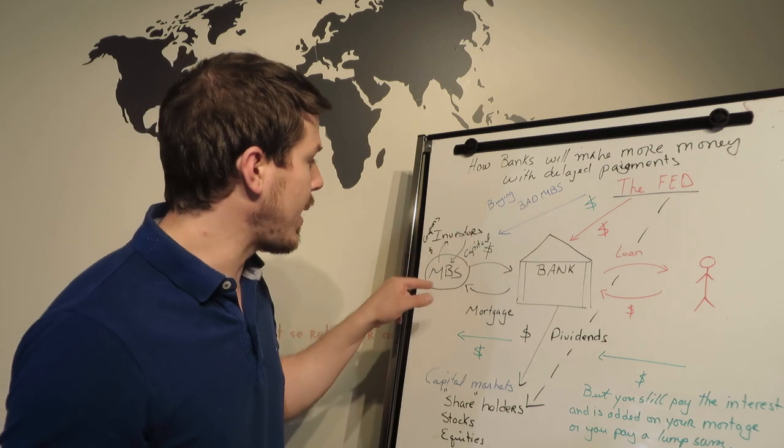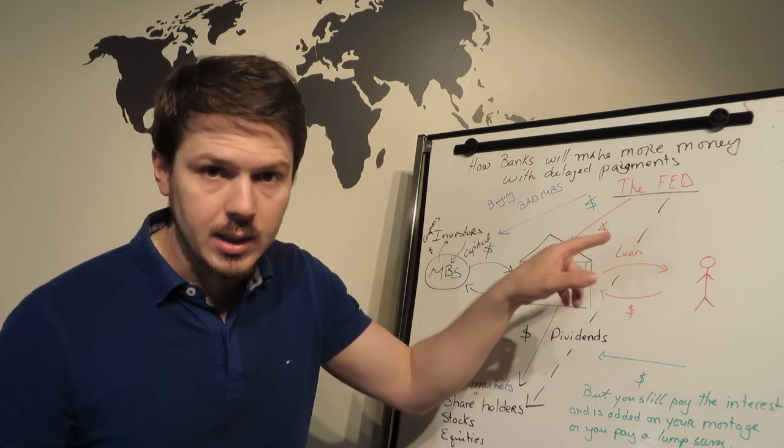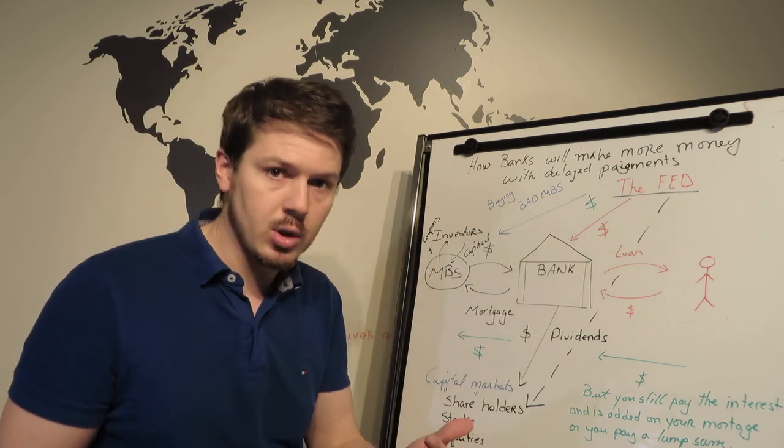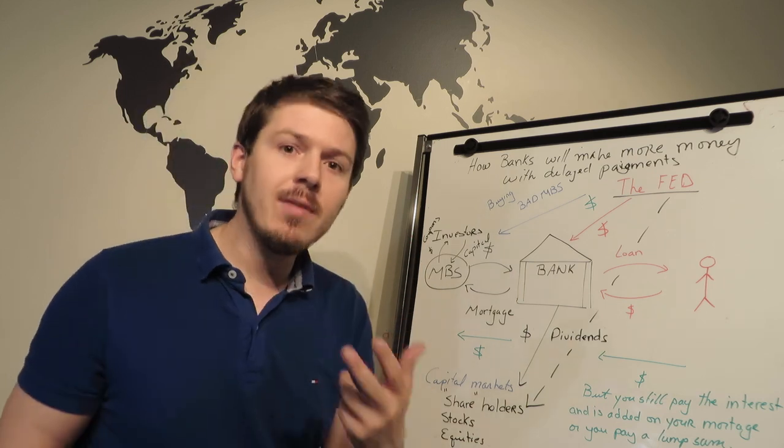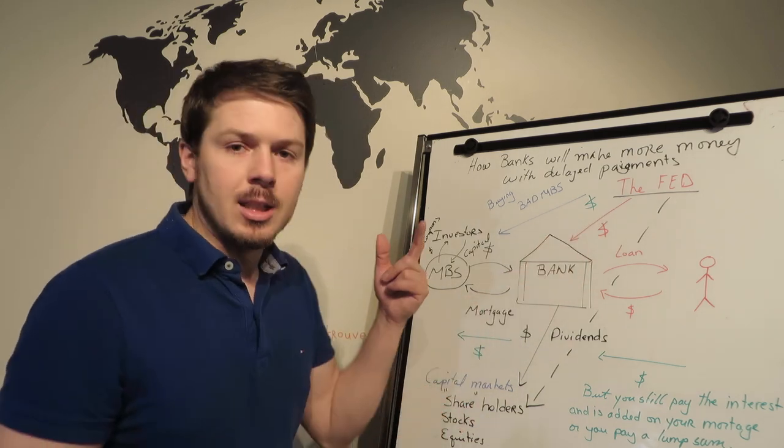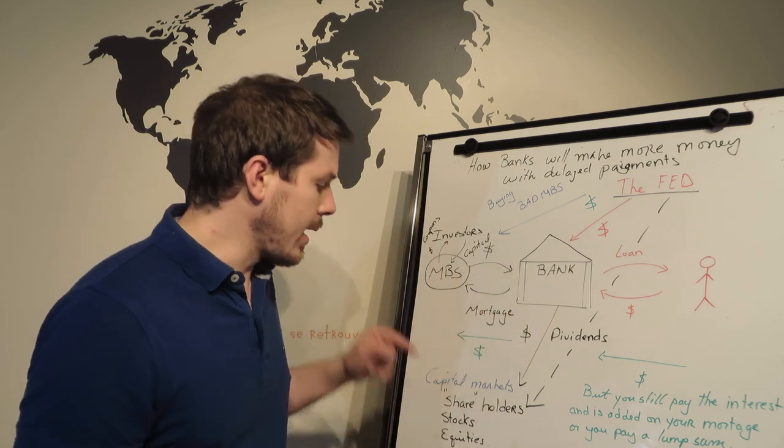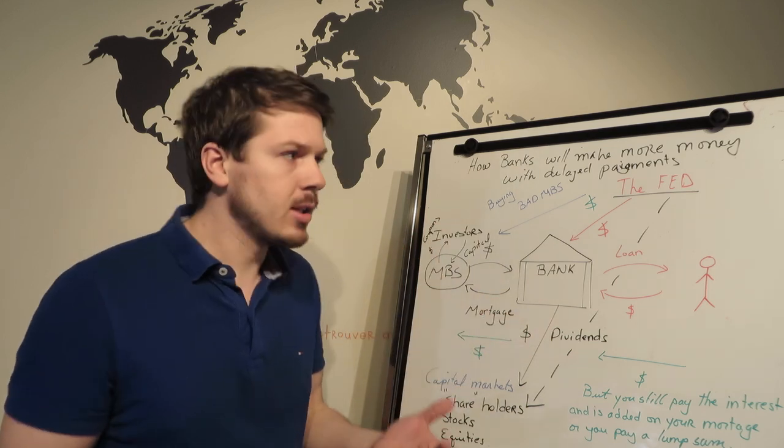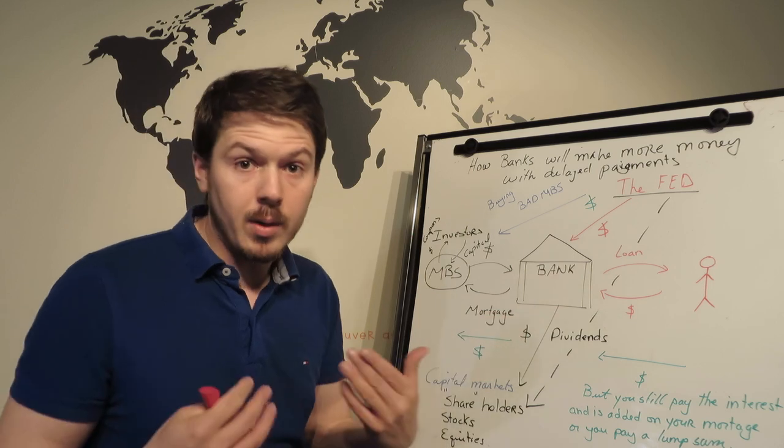What happens is that the Fed buys them. Anything that's not good in the market, the Fed will buy these mortgage-backed securities. They'll buy treasuries, mortgage-backed securities, and now they're even thinking about buying the capital markets.